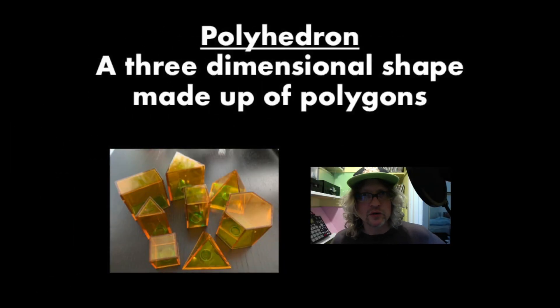So far, I've been pretty loose with my language. I've been saying things like three dimensional objects, three dimensional solids, but the math word that we want to use to describe these things is polyhedron. And our definition of polyhedron is going to be a three dimensional shape made up of polygons.